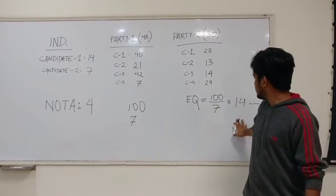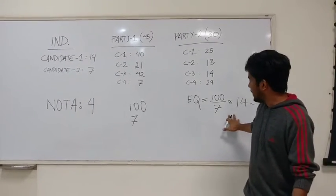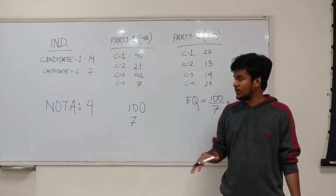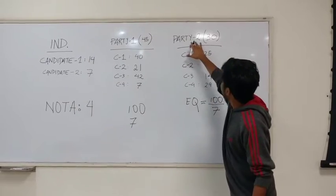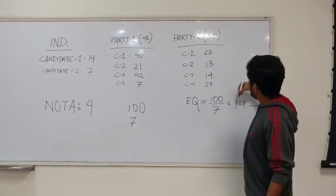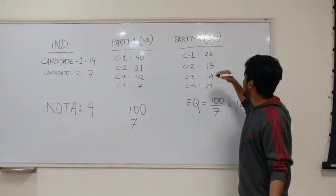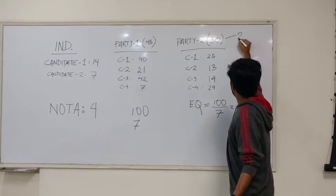How this works is, in order to get a seat in this house you need to have at least 14 votes. Going by this logic, party 2 has 28, so it's gotten at least two seats in this house.